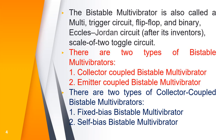The bistable multivibrator is also known by a variety of other names. It is also called a 'just multi.' Since the output of a bistable multivibrator is used to trigger other circuits, it is also named a trigger circuit. It is used to store 1-bit information, so it is also called a flip-flop. It has two stable states, hence it is also named a binary or scale-of-two circuit. It was designed by Eccles and Jordan, so it is also called the Eccles-Jordan circuit.